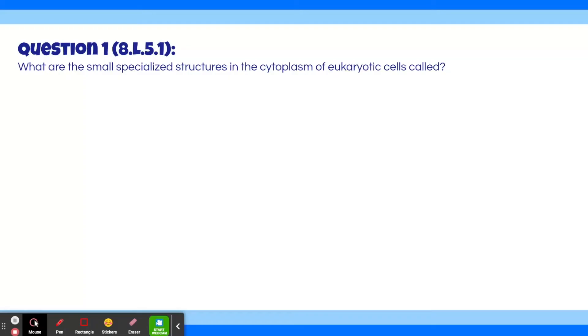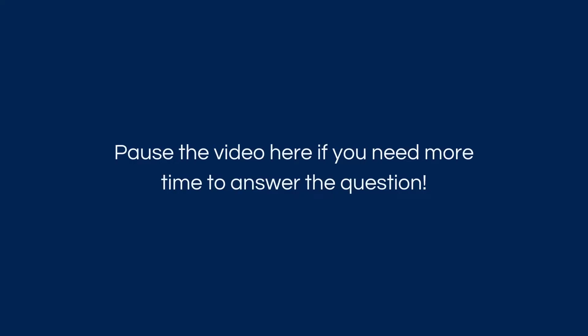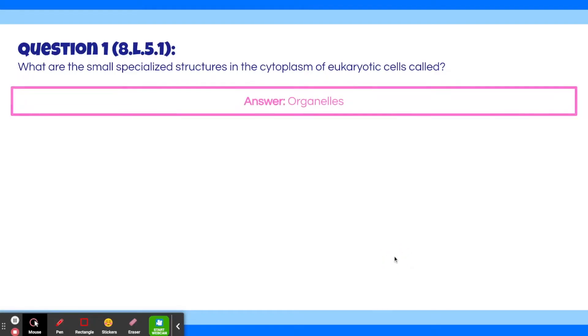With all that being said, let's get into the first question. Question 1: What are the small specialized structures in the cytoplasm of eukaryotic cells called? The answer is organelles.